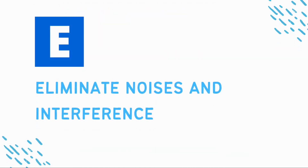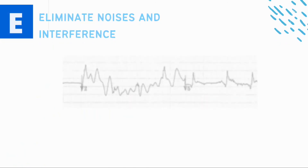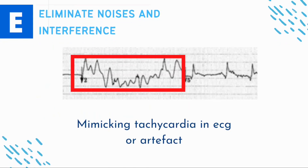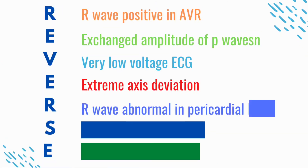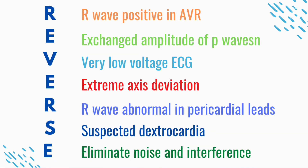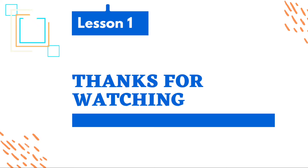V/E — Eliminate noise and interference that is mimicking ST changes, such as those seen in ventricular fibrillation, appearing in one or two leads. By matching one or two criteria from RESERVE, we can interpret misplacement of leads during ECG recording. Thanks for watching.